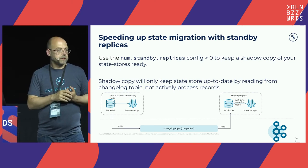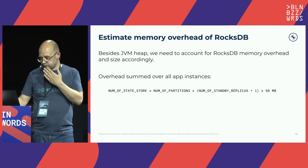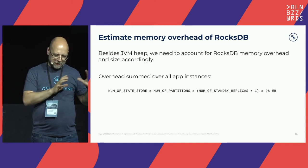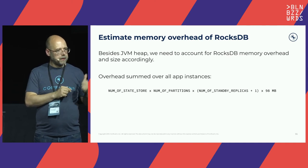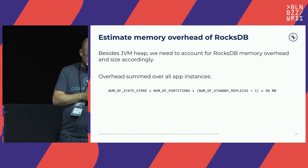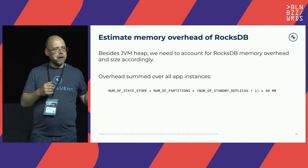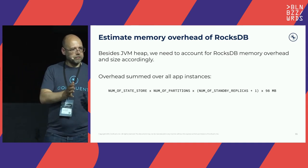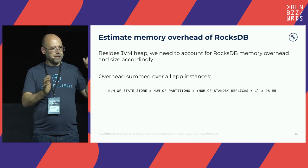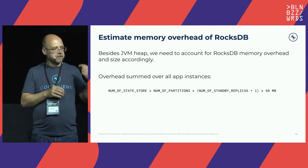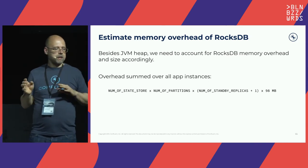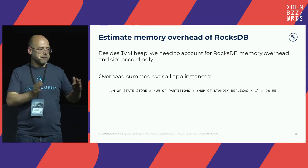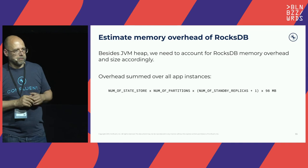One often-overlooked aspect is memory sizing. Beyond JVM memory, each RocksDB instance has an overhead of about 100 MB — tunable, with a default of 98 MB. With standby replicas and many tasks from a large number of input partitions — say 200 partitions — you could need nearly 20 GB just for state store overhead. Sizing RAM is tricky: try to keep the hot set of keys in memory, but this depends on how many keys are hot and how large the messages are — maybe a topic for another talk.